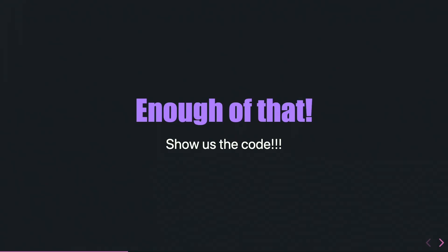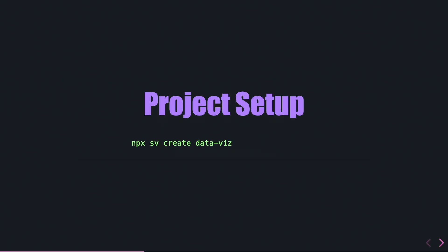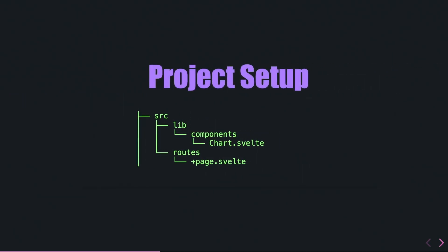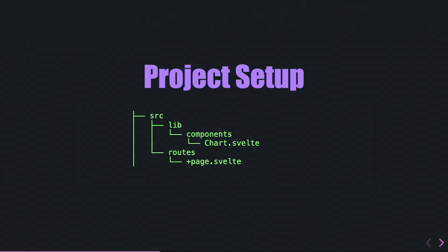I used SvelteKit to get the boilerplate for my project — I wanted something quick and simple to have the foundation. Obviously most of you are familiar with how to create this, but why not include it as a slide? This is the entire setup of my project. I didn't want to overthink it or make it too complex. It's just the page itself where I display the chart, and the chart component itself — simple enough to explain how it could work and how you can scale from there.